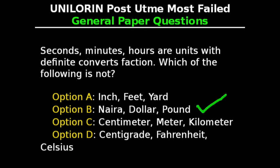All the options apart from Option B have a constant conversion value. Naira, dollar, and pound do not have a constant value because it varies with time, depending on several factors. The value of these currencies can change at any time. So the answer is B.